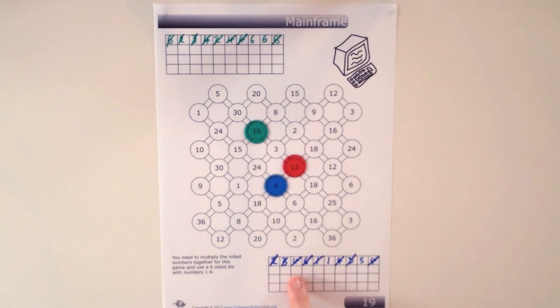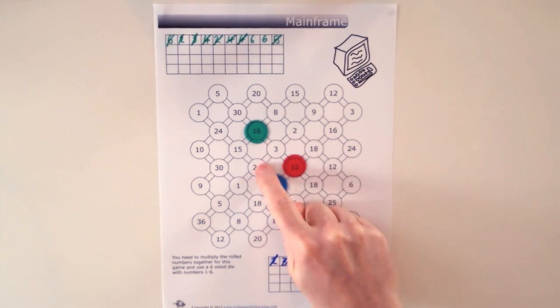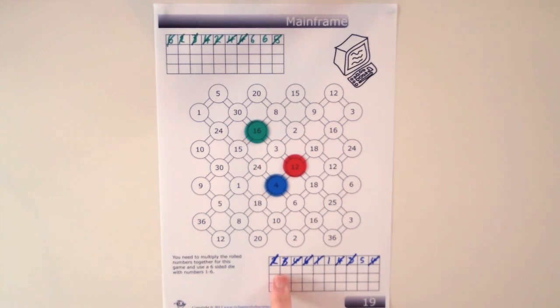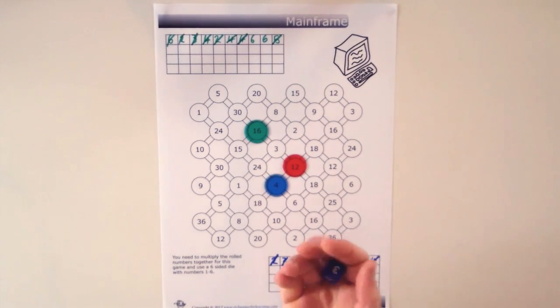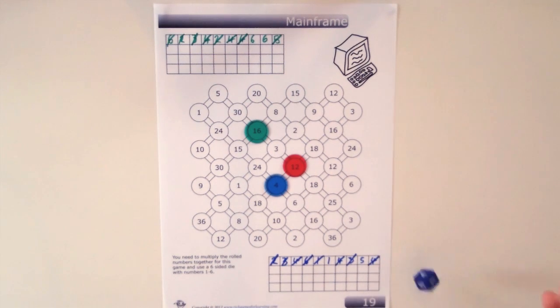Now it is blue's turn and blue only has a 1 and a 5 so they have got nothing they can multiply together to move onto the 24. So when a player reaches that point they just roll the die and roll another 1 and add it to their collected numbers grid.